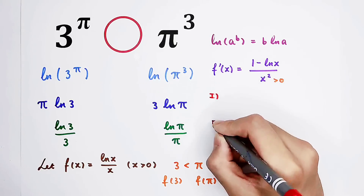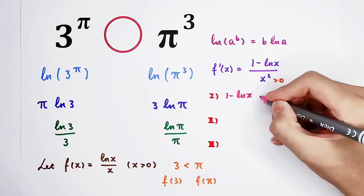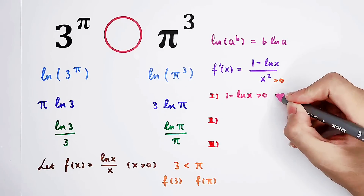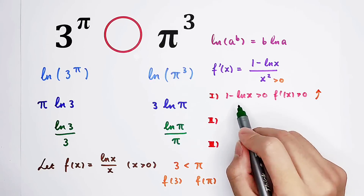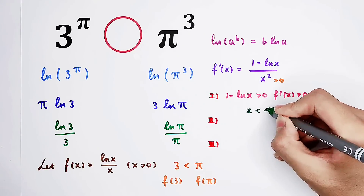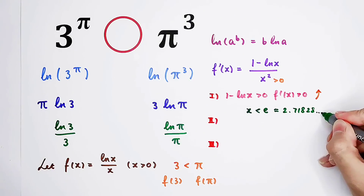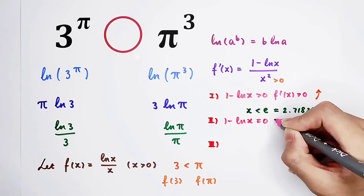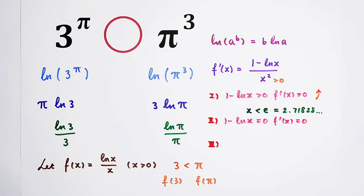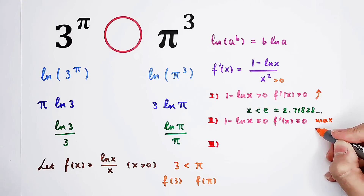So we have three cases. If the numerator is positive, then f prime of x is positive, so the function is increasing. Solving: the natural log of x is less than 1, giving x less than e, where e is approximately 2.71828. If the numerator equals zero, the derivative equals zero and the original function has its extreme value — this occurs at x equals e. If the numerator is less than zero, the derivative is less than zero and the function is decreasing — this gives x greater than e.